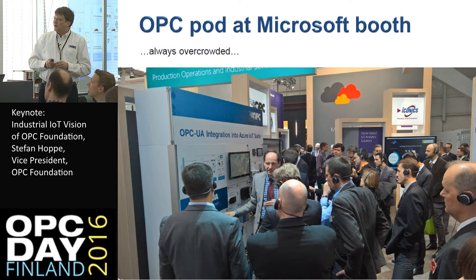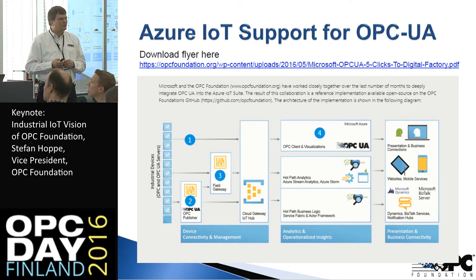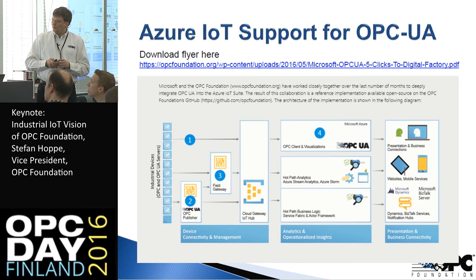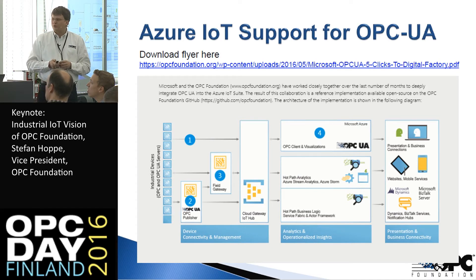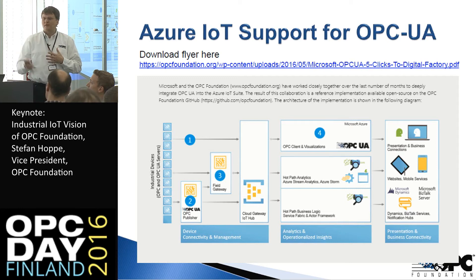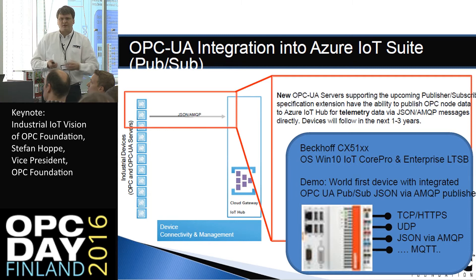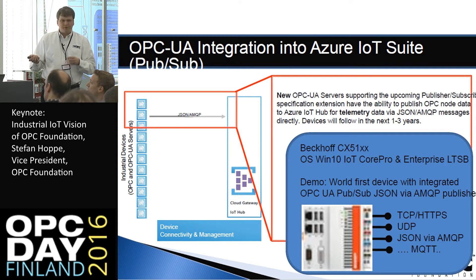They showcased how Microsoft integrated OPC UA in different areas — one, two, three, four — into Azure cloud. There's a deep integration of a gateway to collect data from existing devices, convert them, and publish them into Azure cloud. But also, devices can directly push OPC UA via AMQP directly into Azure cloud. Beckhoff at that show integrated Microsoft stuff directly into the controller, allowing them to push OPC UA publisher-subscriber data directly via AMQP into Azure cloud.